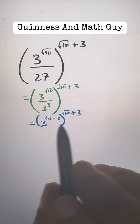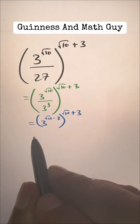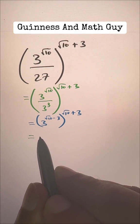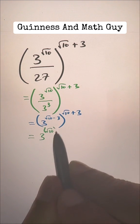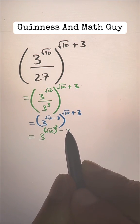A plus B times A minus B is A squared minus B squared. So we can write this as square root of 10 squared minus 3 squared.